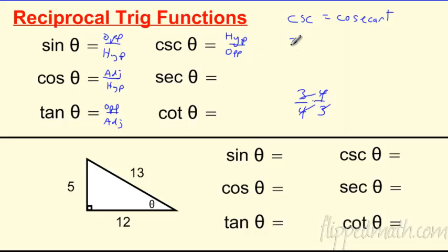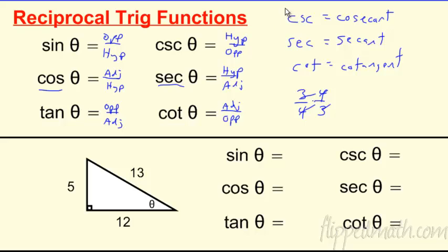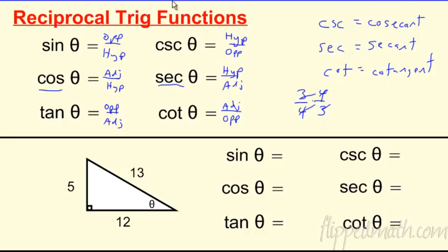Secant (SEC) is the reciprocal of cosine — it looks like cosine spelled backwards, which is how I remember it. Flip it: hypotenuse over adjacent. Cotangent is the reciprocal of tangent: adjacent over opposite. You may also see these written as: cosecant = 1/sin(θ), secant = 1/cos(θ), and cotangent = 1/tan(θ). Don't freak out when you see that notation later.